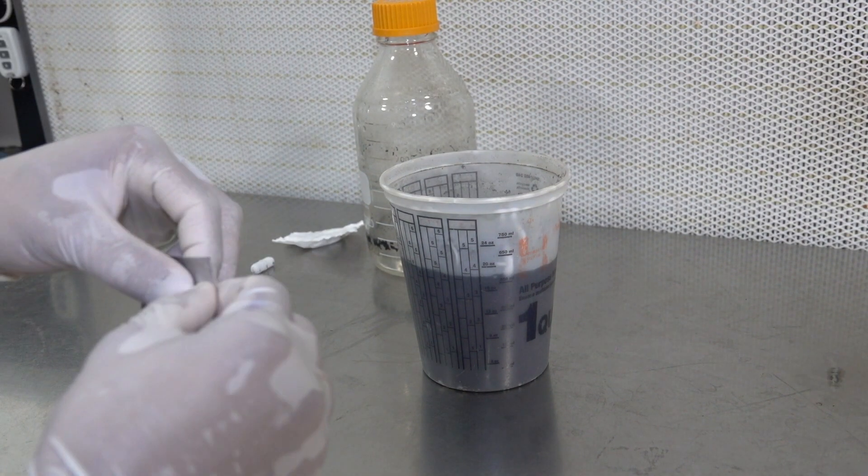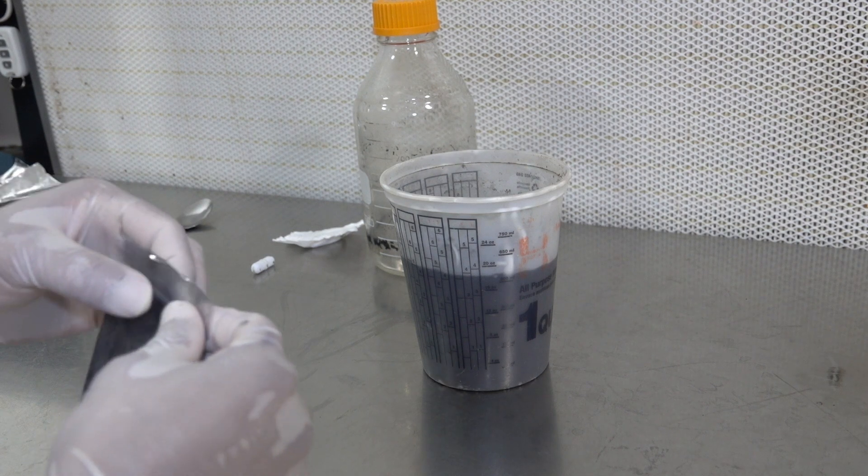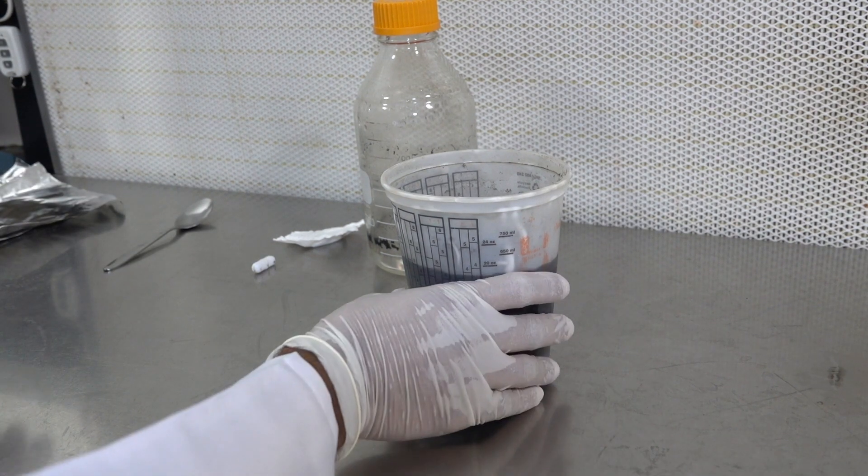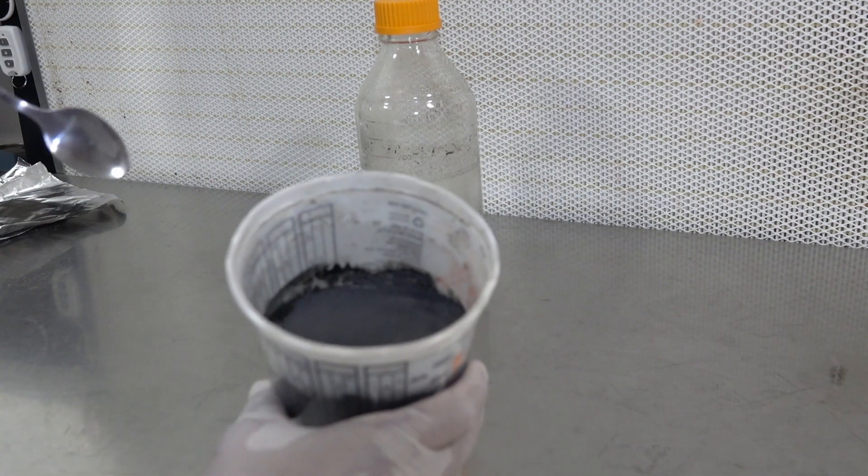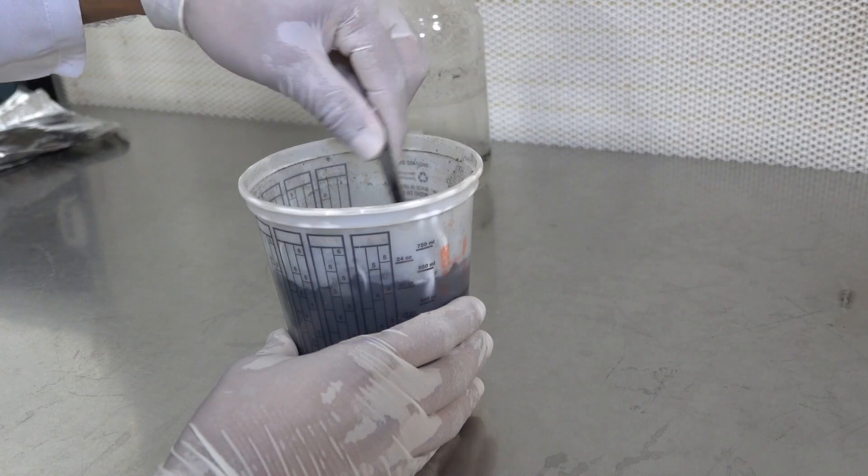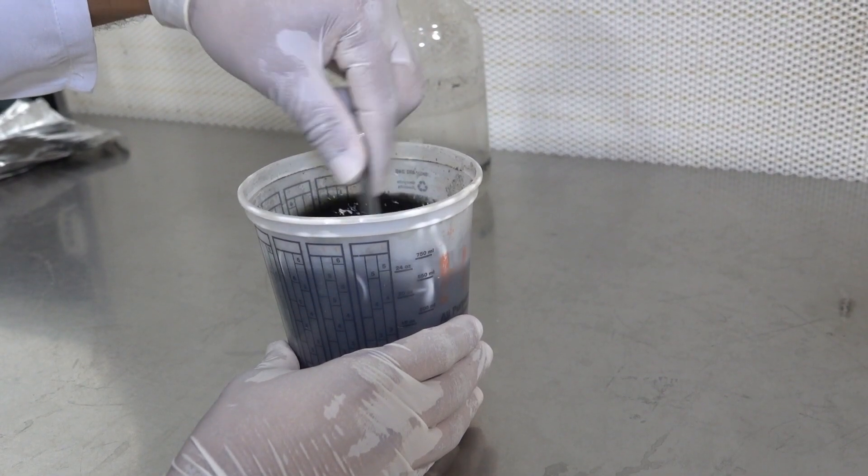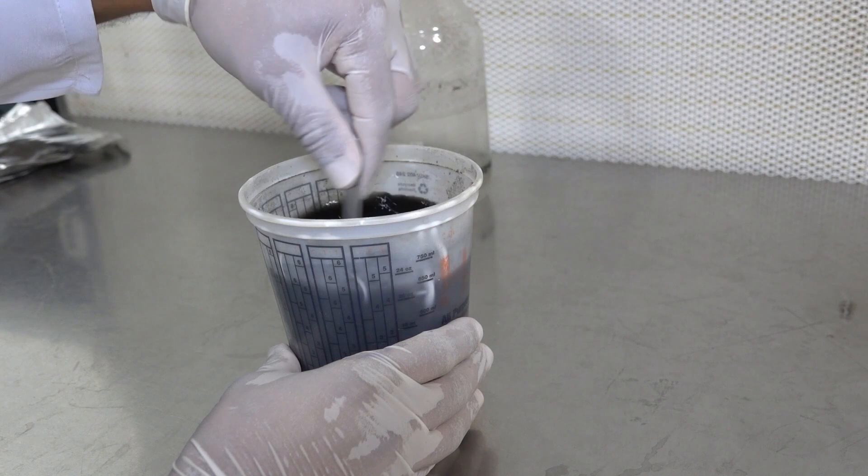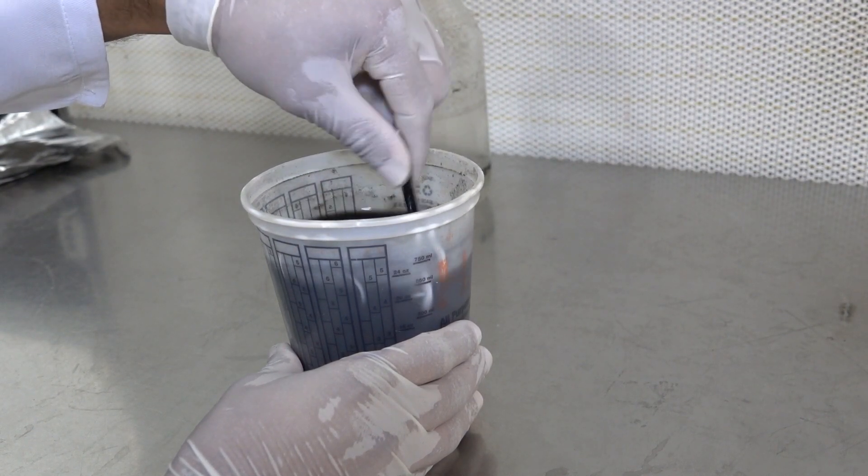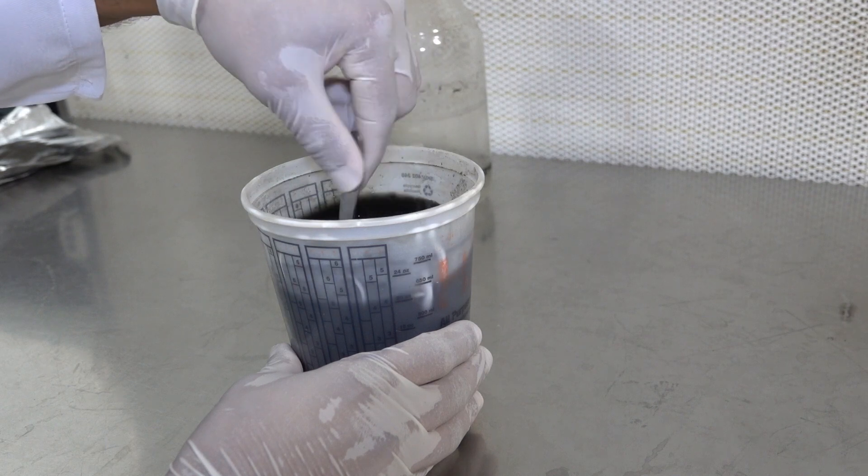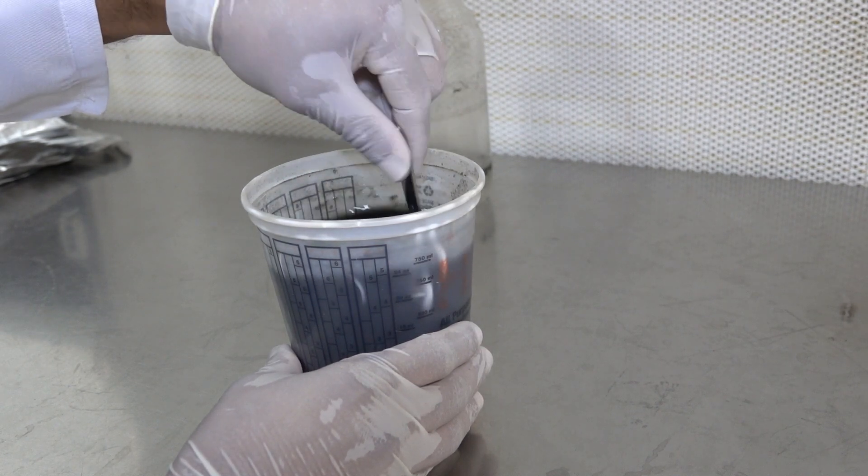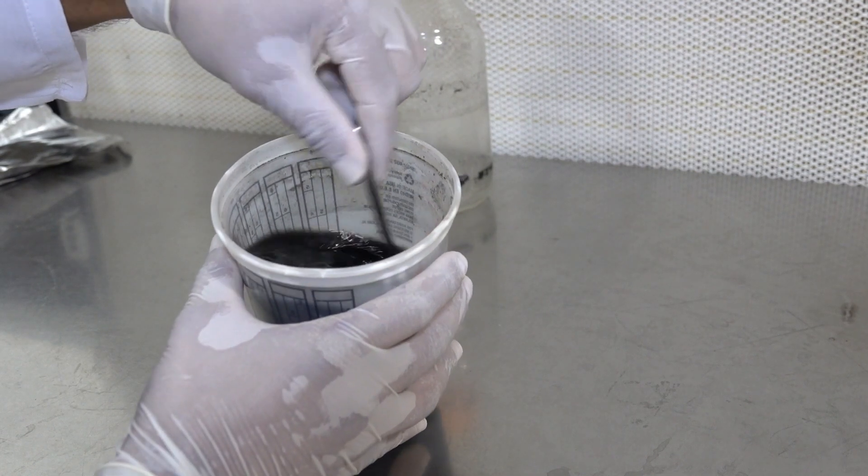So once you have your pre-mix poured into the water, we're going to mix it. Try to mix this thoroughly. Now if you aren't able to mix it thoroughly, it really doesn't matter because when it's being autoclaved it's going to melt everything together and it's going to mix really nicely. But we are going to try to get it as thoroughly mixed as possible.